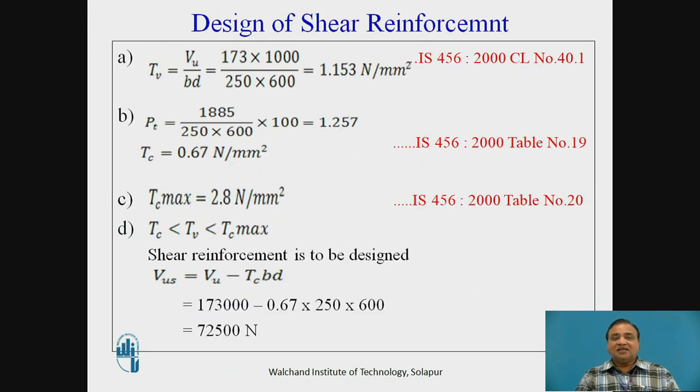Now we have to design for shear and check for deflection. In design for shear, we should first calculate τv, that is nominal shear stress, that is 1.153 N/mm². Then we should find out percentage steel, that is 1.257%. τc from table number 19, and τc max from table number 20 of IS456. Shear reinforcement is to be designed because Vus = Vu - τc × b × d, which works out to be 72500 N.